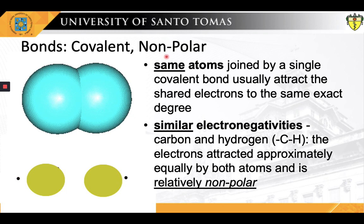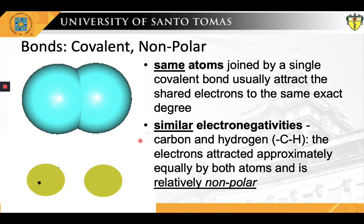A non-polar covalent bond is a type of chemical bond formed when electrons are shared equally between two atoms. This is termed non-polar because the difference in electronegativity is mostly negligible, and this type of covalent bond occurs when the two atoms in the bond are either the same atom or different atoms with only a slight difference in electronegativities. Electronegativity is a chemical property that describes the tendency of an atom or functional group to attract electrons towards itself. The non-polar covalent bond between two different atoms is exemplified by the bond between carbon and hydrogen.